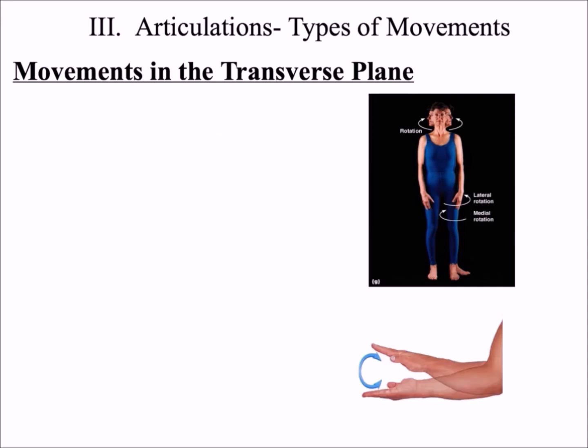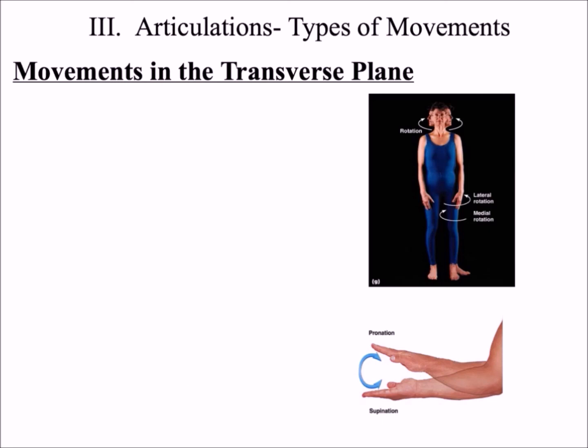In the forearm, there is a special name for medial and lateral rotation: these terms are called pronation and supination. Pronation is the motion of pouring — if your palm is face up and you turn your palm face down, that is pronation. In supination, your palm is face down and you turn your palm face up.